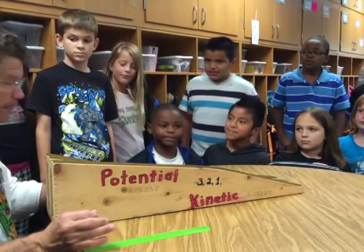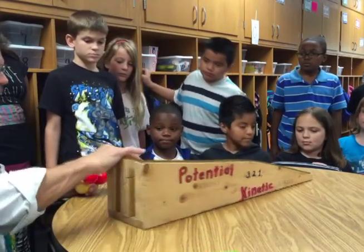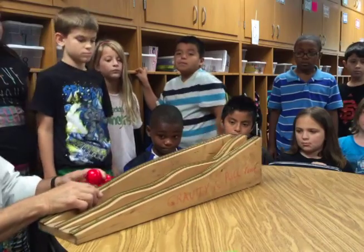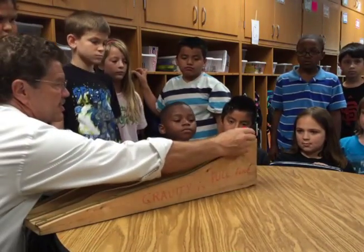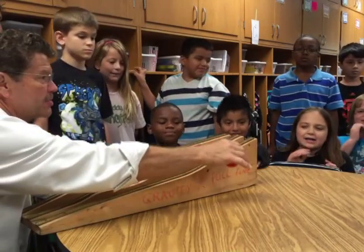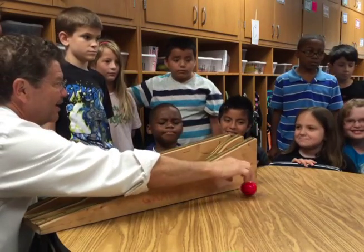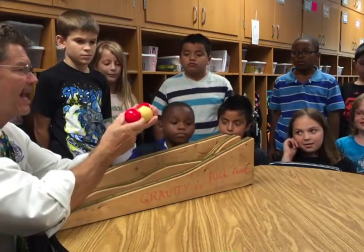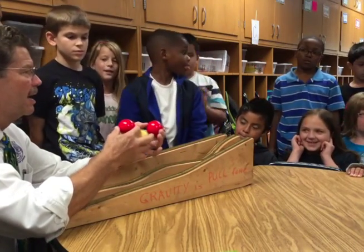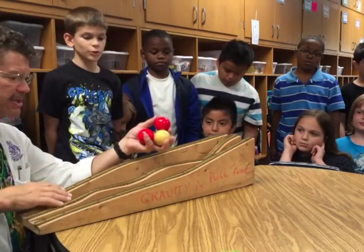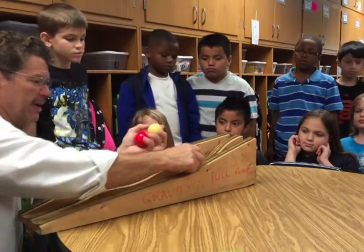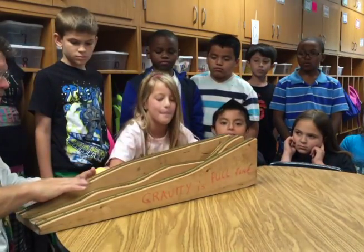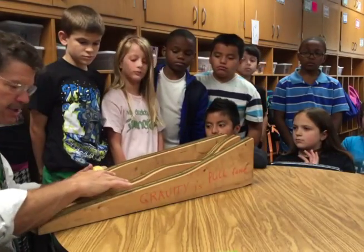I brought in a ramp I made. It has three different rails, but they're all from the same height — we call that potential energy. The balls are all the same size and shape but different colors. Friction should be the same on the rail for all of them. But I designed the tracks differently: one goes fast then slow, one goes slow then fast, and one goes fast-slow-fast-slow.